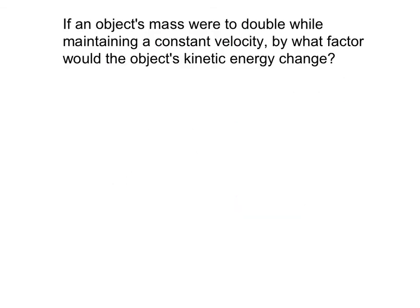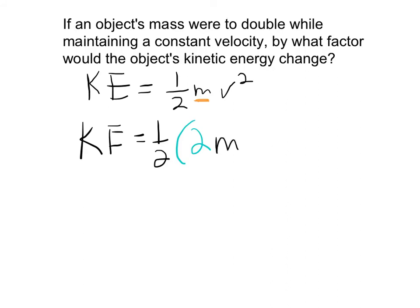If an object's mass were to double while maintaining constant velocity, by what factor would the object's kinetic energy change? So we'll refer to the equation to solve this: KE equals 1/2 mv squared. Now the mass is not squared. That means there's a linear relationship, they're directly related between mass and kinetic energy. So let's plug in the change. We change kinetic energy equals 1/2, we double the mass, 2m and v squared. Now the answer should already be obvious to you. To get this right here, we had to multiply this equation by 2.